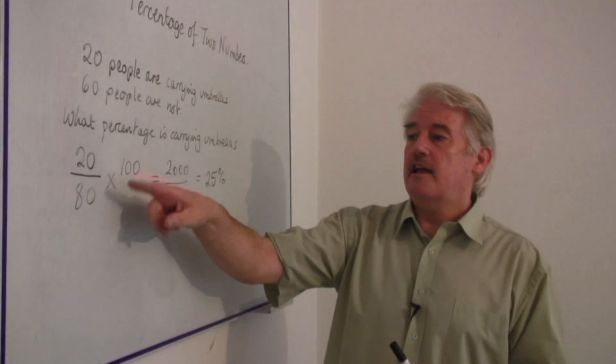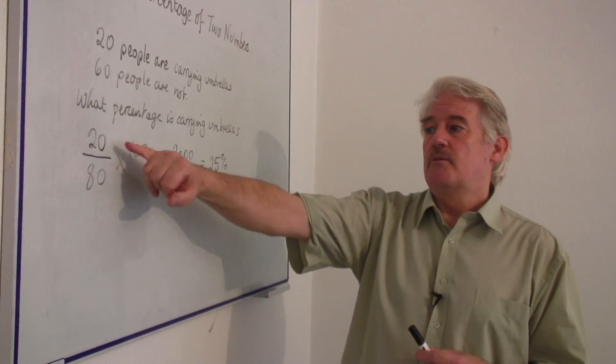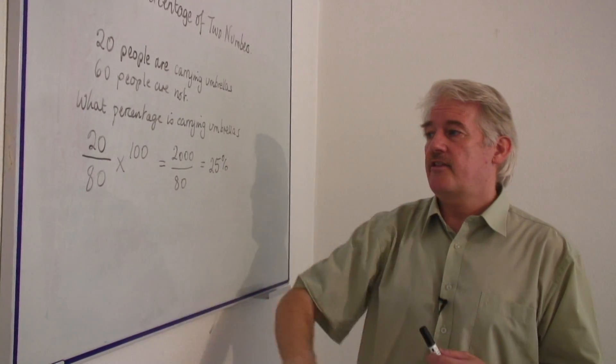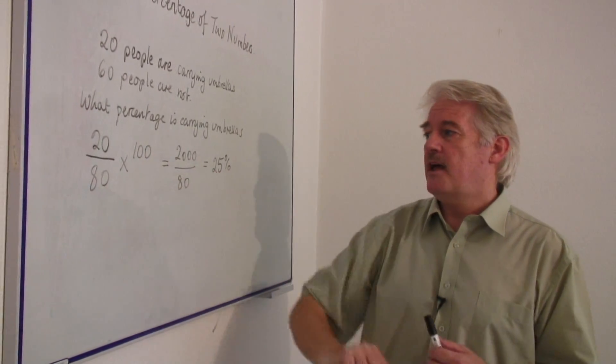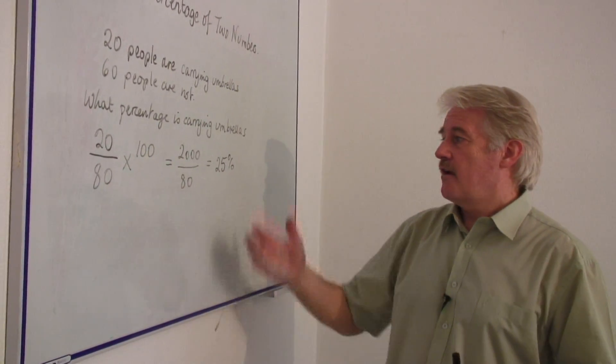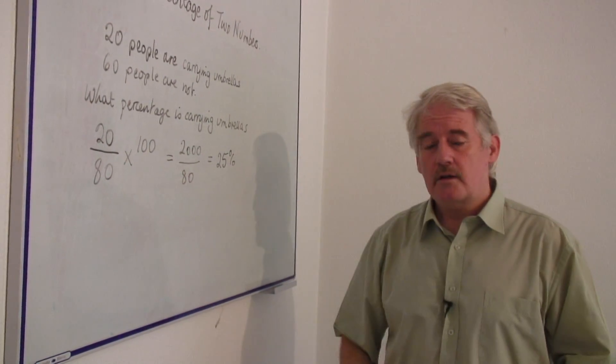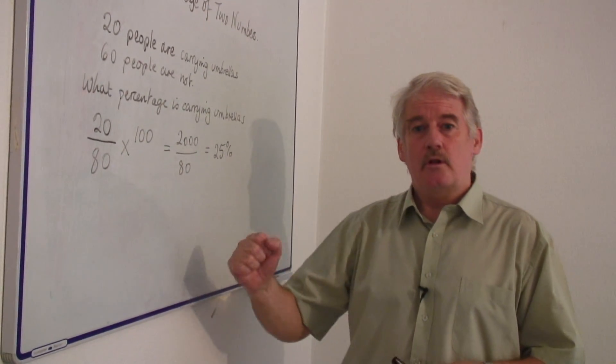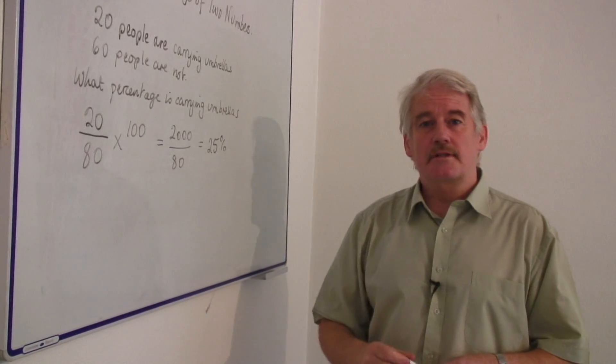Simply calculate the two numbers, put one over the other, multiply by a hundred, and there you've got simple twenty-five percent.